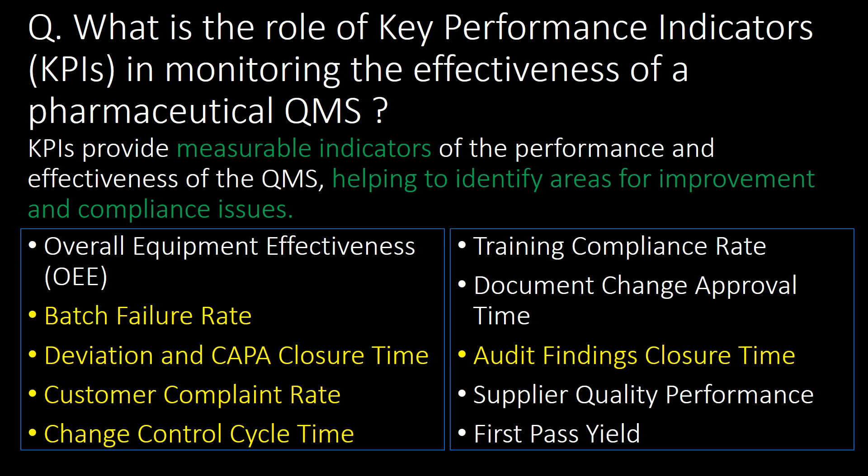What is the role of key performance indicators, i.e., KPIs, in monitoring the effectiveness of a pharmaceutical QMS? KPIs provide measurable indicators of the performance and effectiveness of the QMS, helping to identify areas for improvement and compliance issues. A few important KPIs are batch failure rate, deviation and CAPA closure time, customer complaint rate, change control cycle time and audit findings closure time.